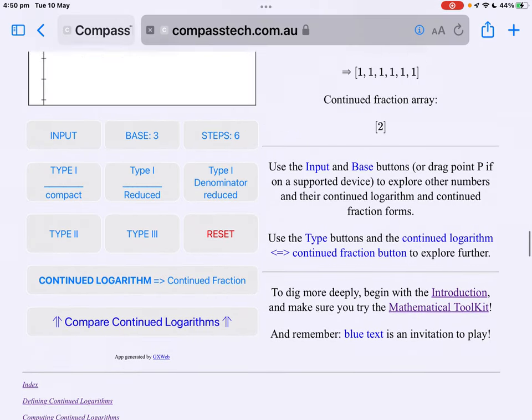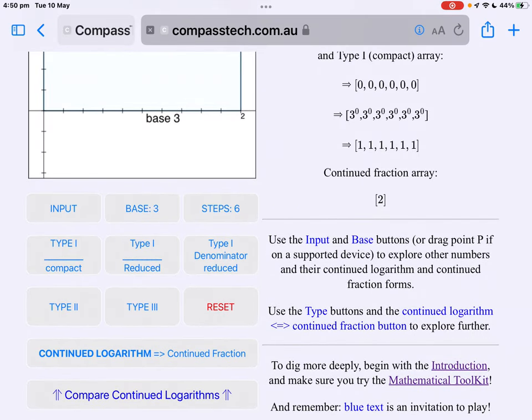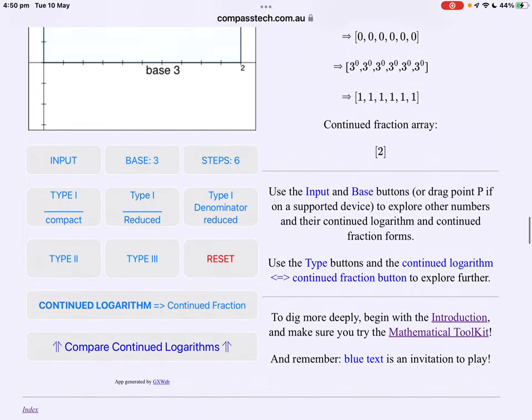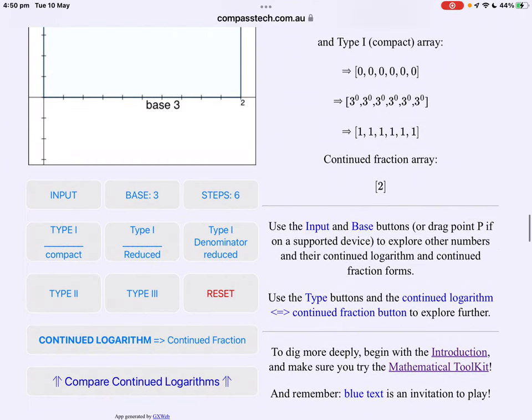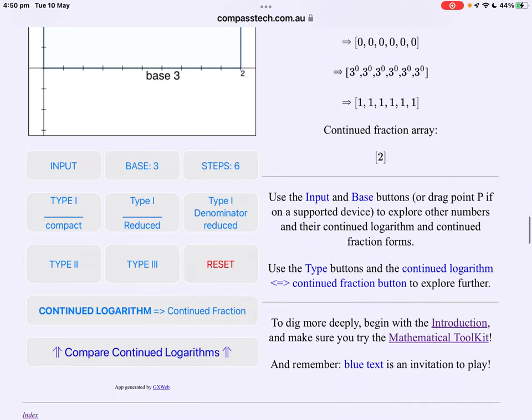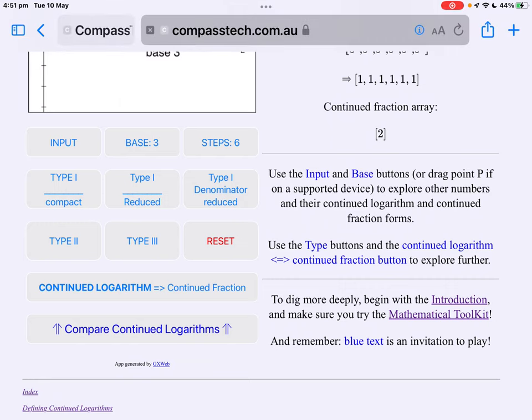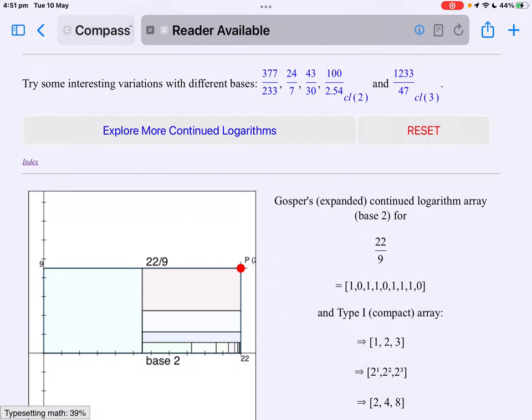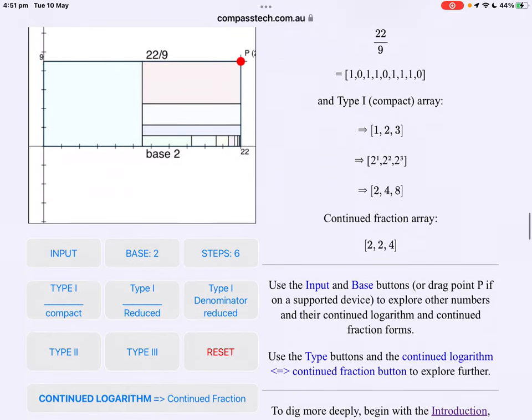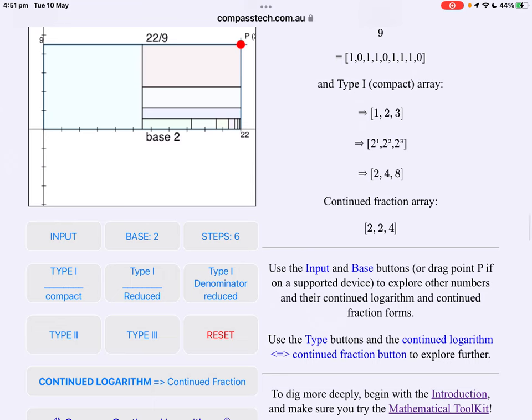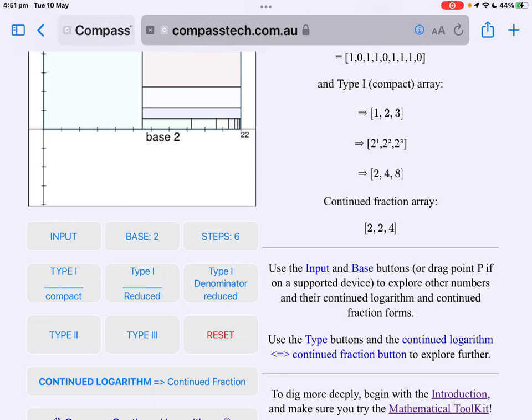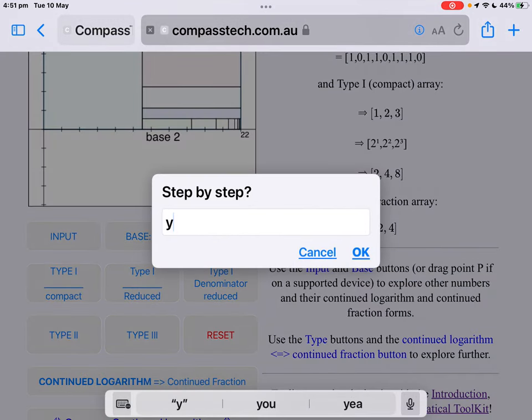So they came up with a different approach. Quite a different approach. And this led to what they labeled type 2 and type 3. Let's have a look. We might go back to our base 2, keep things simple first. So there's our 22 over 9 expands to 1, 2, 3. Type 2. And this time we will do a step-by-step. Our base is 2.